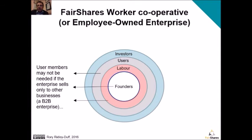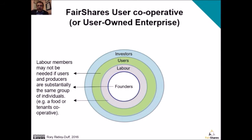We can think of some circumstances in which one or more groups might be excluded. There can be a case for worker cooperatives and employee-owned enterprises — for example, if you've constituted a business that doesn't supply the public and only supplies other businesses, it might make sense not to have user members. Similarly, if you're a user cooperative and your labour force are all users as well, it doesn't necessarily make sense to have both labour and user members — in a food co-op you grow the food and eat it; in a tenants co-op you might look after your properties as well as living in them.